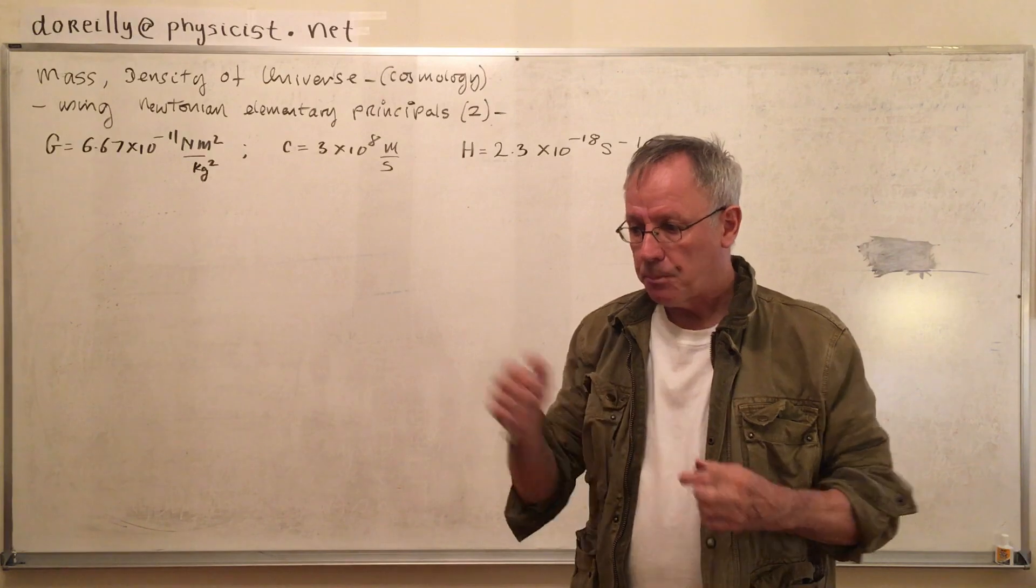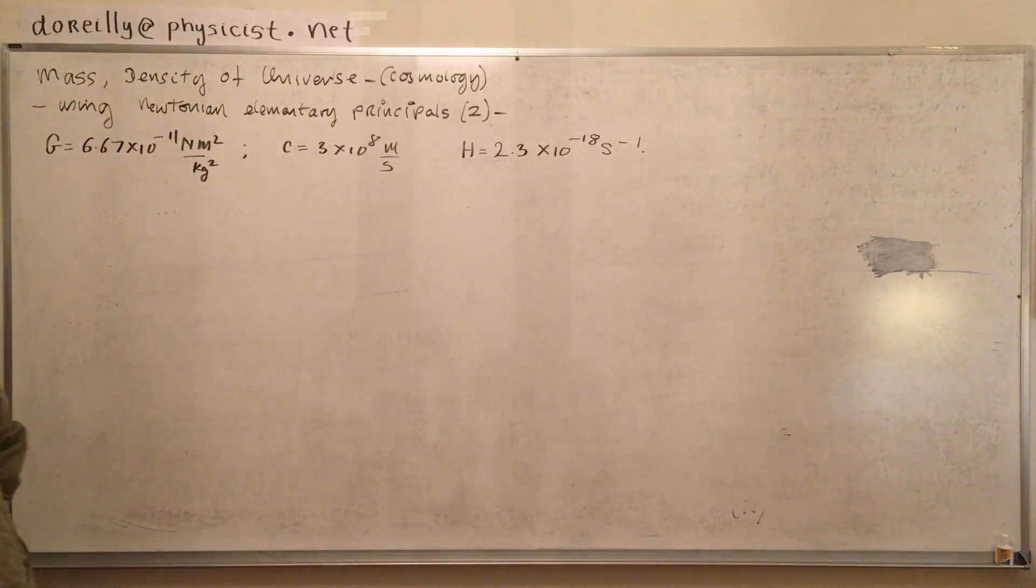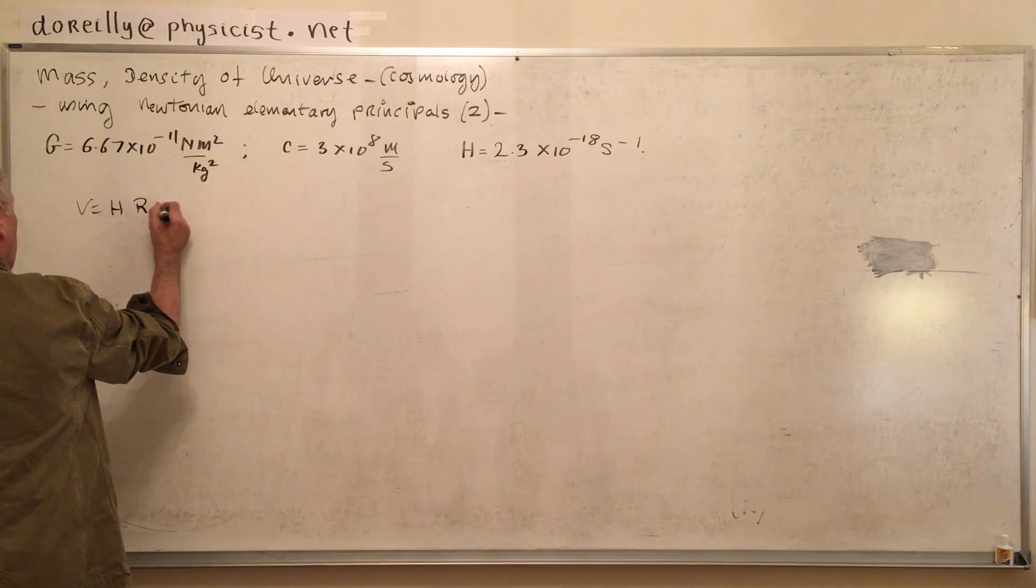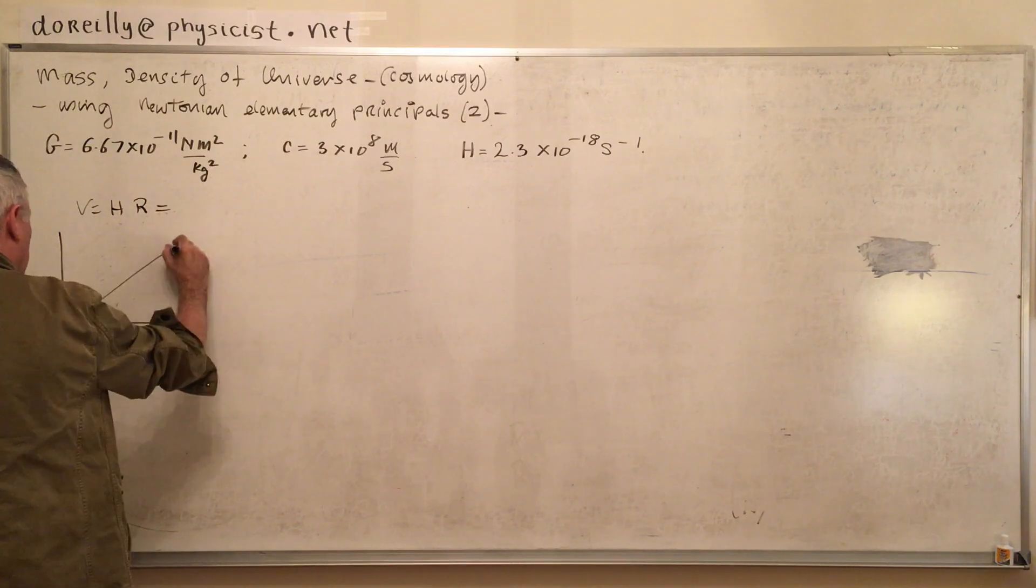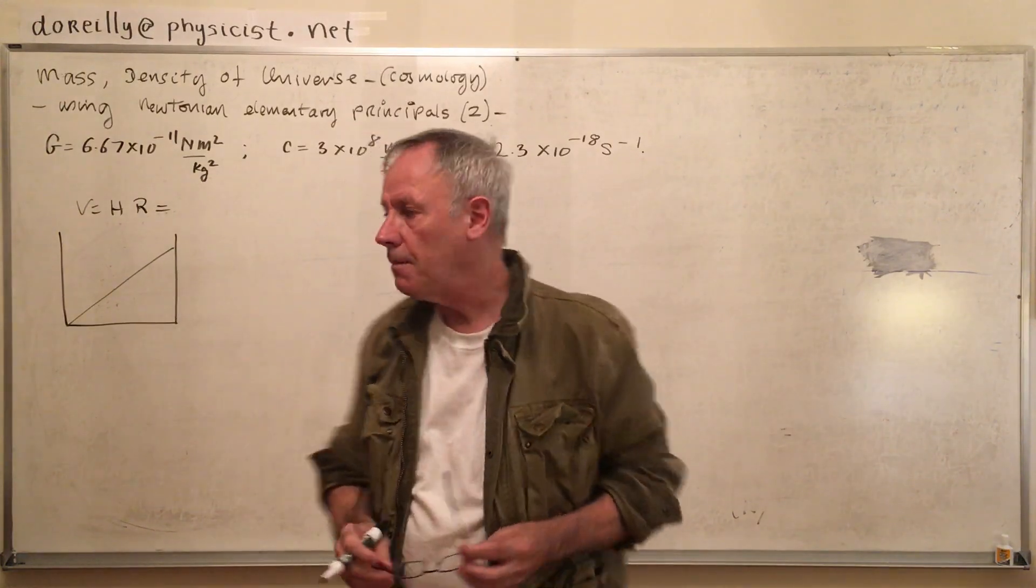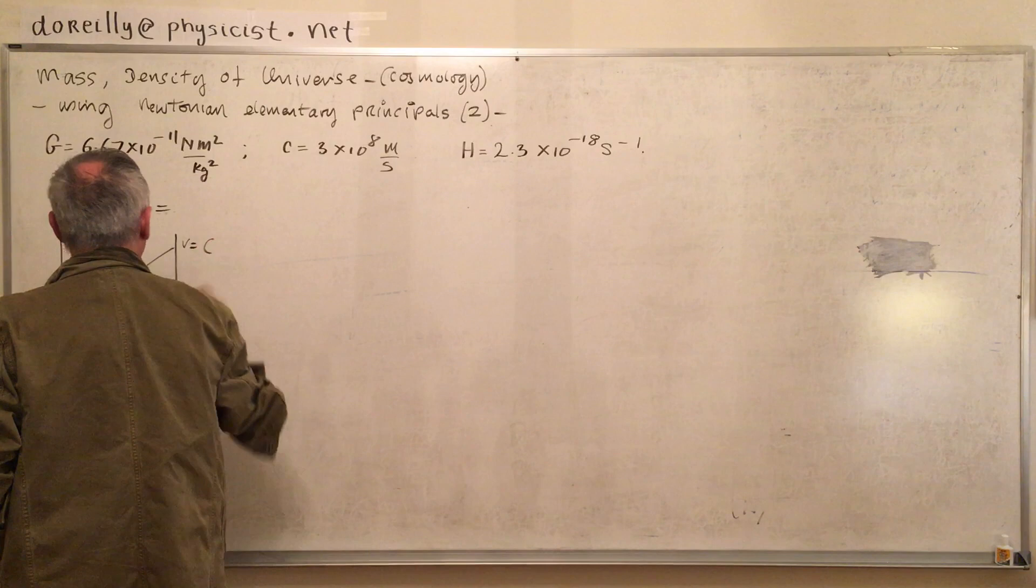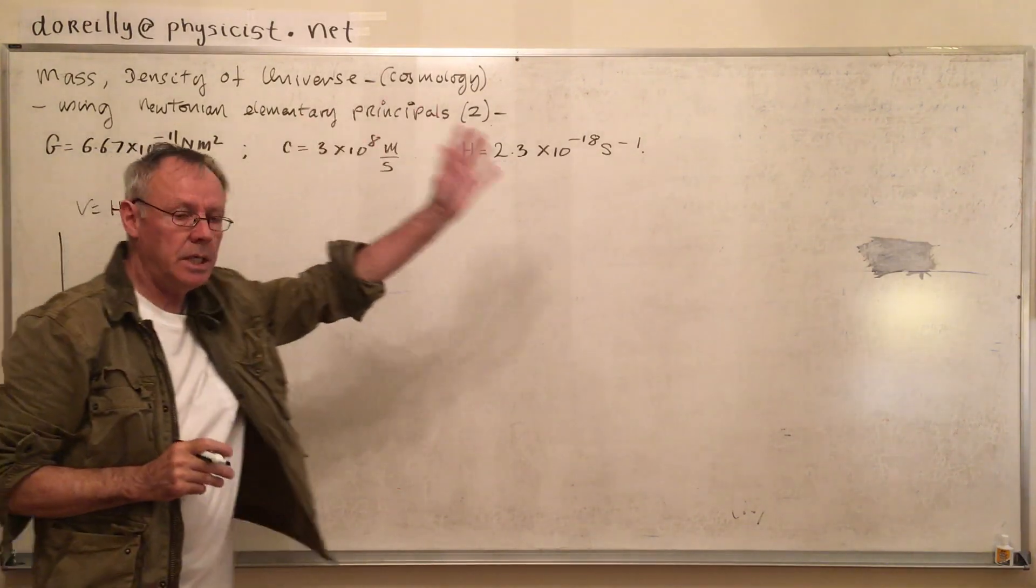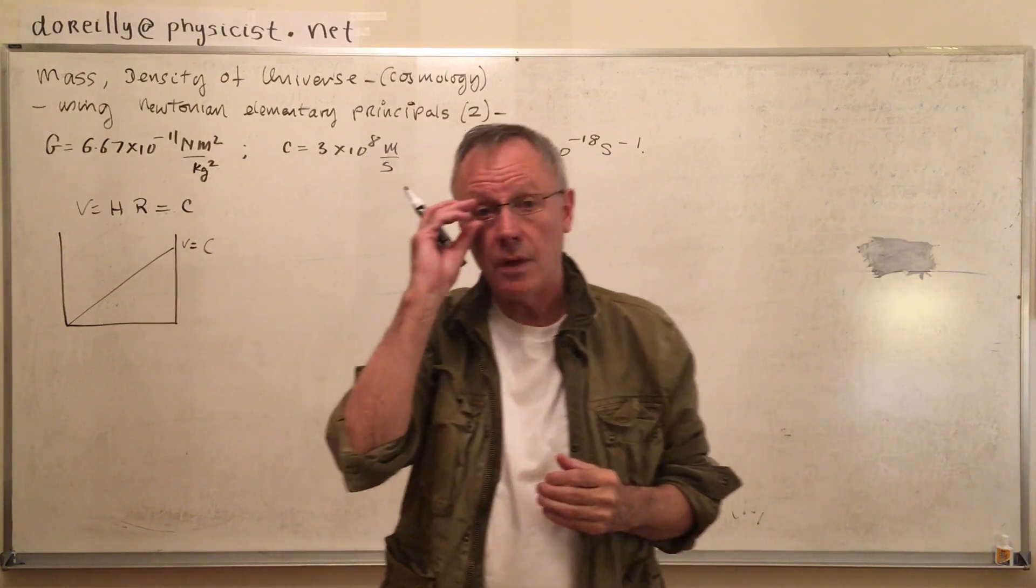So first things first. We had V = HR. So at the end of the universe, the edge of the universe—the Hitchhiker's Galaxy has a restaurant at the edge of the universe—at the edge of the universe, where V = C, the escape velocity is the speed of light. All the galaxies receding away from us turn out to be now at the edge of the universe, at the speed of light.